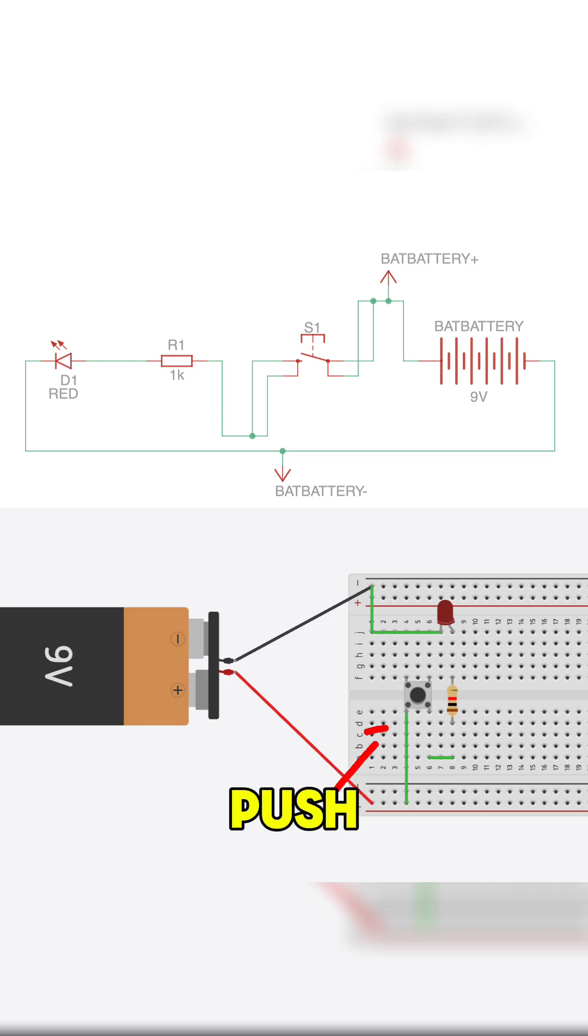Now, let's look at the version with the push button. In the schematic, it's labeled S1. When you're not pressing the button, the circuit is open. No current flows, LED stays off.